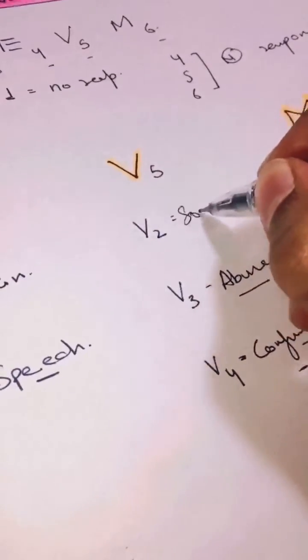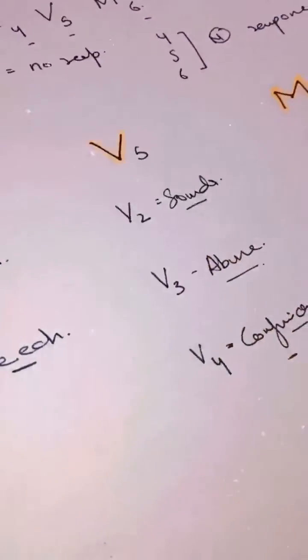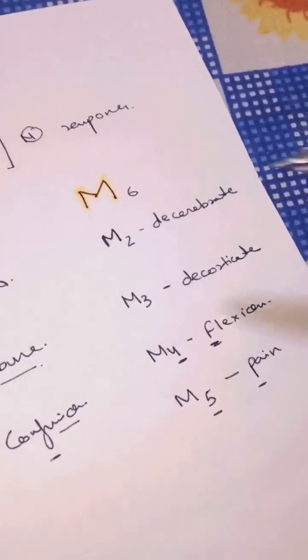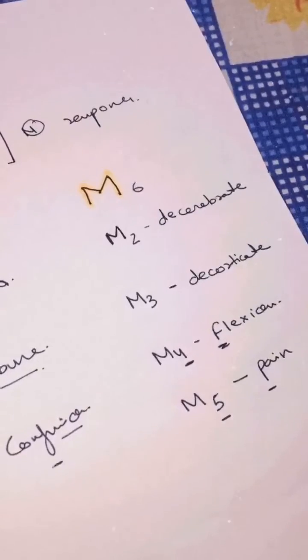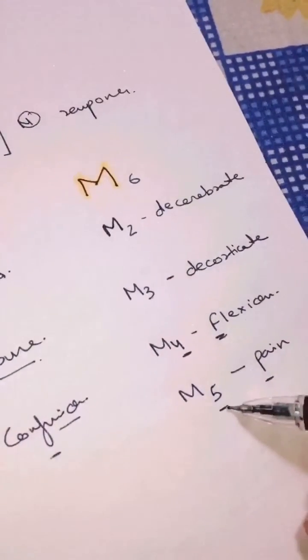Now the last and final column we have M6, in which one will obviously be the same - no response. Six is normal. So what we have is five. Five in Hindi is paanch, so movement on pain.